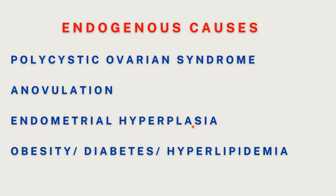Endometrial hyperplasia is a premalignant lesion and a precursor for endometrial cancer — a woman with endometrial hyperplasia is at higher risk. Next, obesity, diabetes, and hyperlipidemia are interrelated risk factors. In obesity, there is reduced serum sex hormone binding protein, allowing free estrogen to circulate, and peripheral conversion of steroid hormones is aromatized into estrone in peripheral fat — both mechanisms leading to estrogen excess.